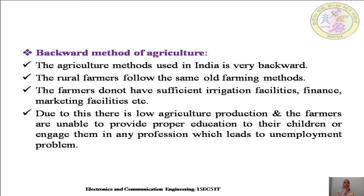The next reason is backward methods of agriculture. The agriculture methods used in India are very backward. Rural farmers follow the same old farming methods and do not have sufficient irrigation facilities, finance, or marketing facilities. They are not aware of scientific methods of cultivation. Due to this, there is low agricultural production and farmers are not able to provide proper education to their children or engage them in any profession, which leads to the unemployment problem.